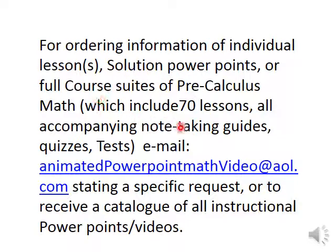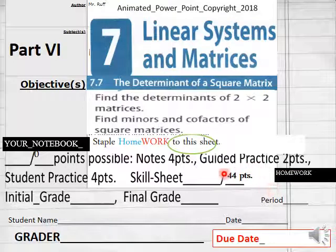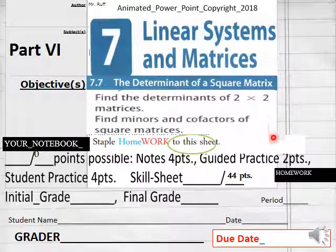Hello everybody, getting ready to do lesson 7.7 part 6 homework for pre-calculus math today. My email is animatedpowerpointmathvideo@aol.com and for today's homework you got 44 points on today's homework assignment part 6, 7.7 determinant of a square matrix.